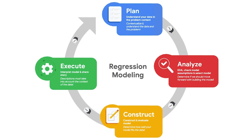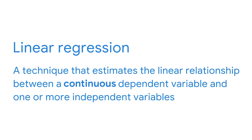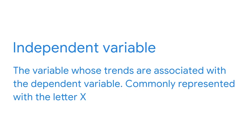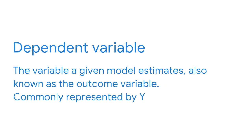To recap, linear regression is a technique that estimates the linear relationship between a continuous dependent variable and one or more independent variables. An independent variable is the variable whose trends are associated with the dependent variable, commonly represented by X. The dependent variable is the variable that a given model estimates, also known as the outcome variable, commonly represented by Y. We'll learn more about simple linear regression. Simple linear regression is a technique that estimates the linear relationship between one independent variable X and one continuous dependent variable Y.